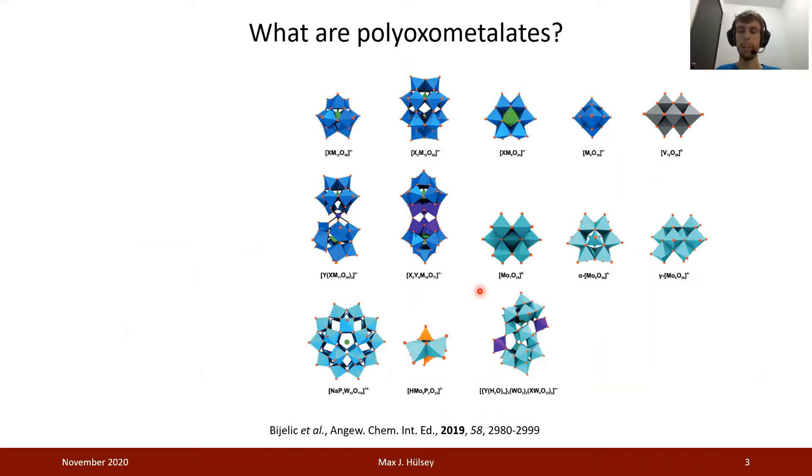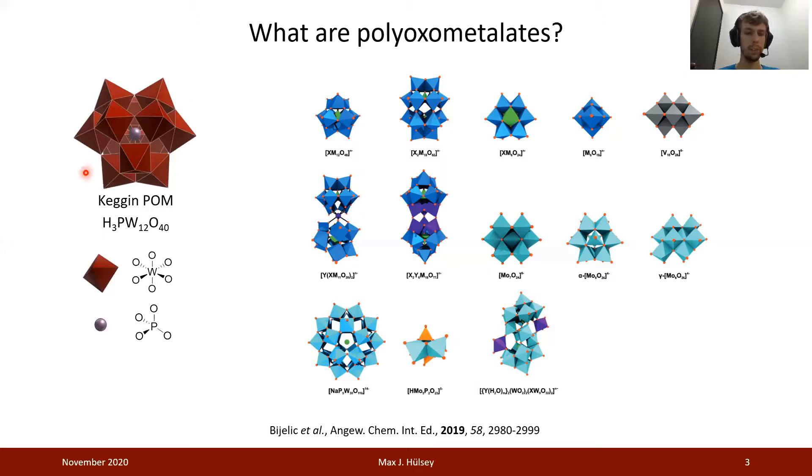Polyoxometalates are small and molecularly defined metal-oxo clusters. There is a vast variety of structures and compositions reported so far, but we will focus today mostly on this Keggin polyoxometalate, which has the composition of phosphotungstic acid, PW12O40. It consists of tungsten oxygen octahedra and a phosphate tetrahedron in the middle.